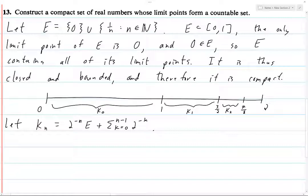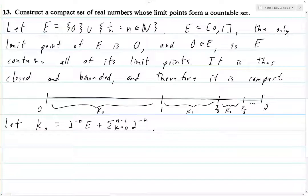When we plug in N equals 1, we take E, multiply by 1/2 — squishing it down — then add 2^0, which is 1, shifting it over to where K one is on the graph. For K two, we scrunch it down so its length is only 1/4, then shift it over by 1 and then by another 1/2, so it starts at 3/2. And then we go onwards and onwards.